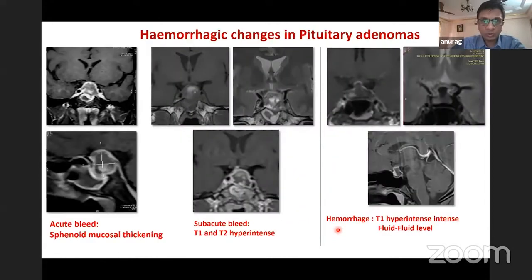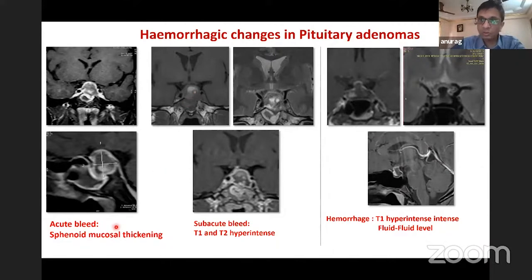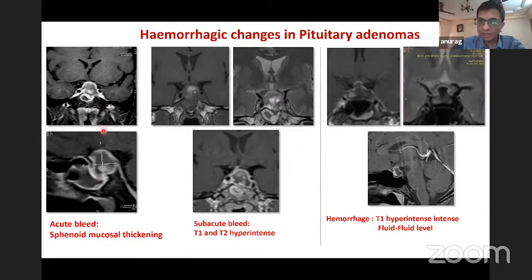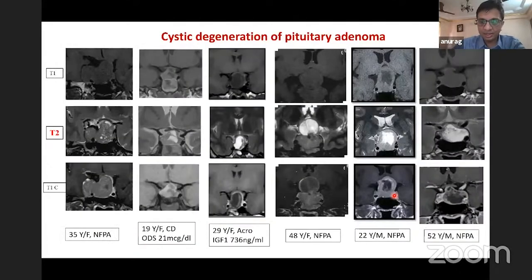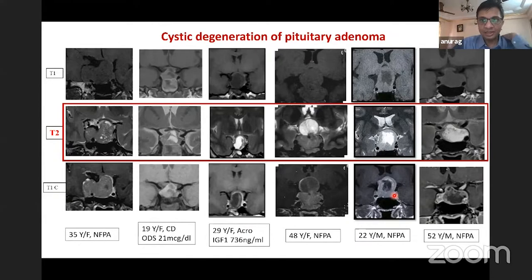An important characteristic of pituitary adenomas is hemorrhage. Students should remember: T1 bright signal with a fluid level suggests a bleed. In acute apoplexy it may not be immediately apparent, but there will be sphenoid mucosal thickening. Reports may describe 'sphenoid sinusitis and sterile abscess' when the clinical background is unknown. As apoplexy evolves, T1 and T2 hyperintensity appears; in chronic hemorrhage, T1 hyperintensity with a fluid level is seen.